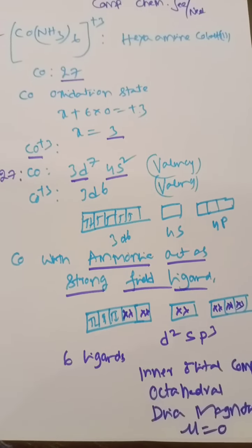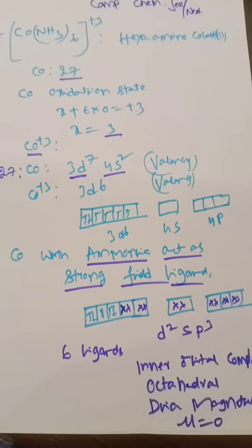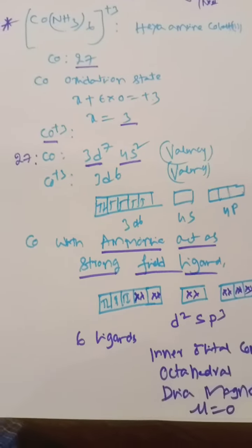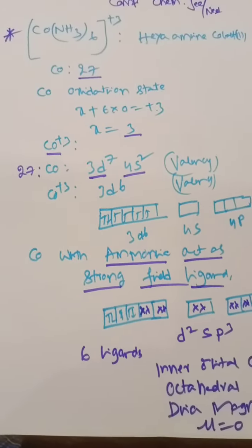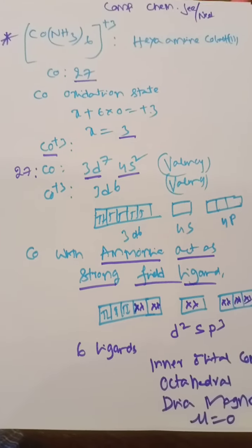So cobalt(III) is 3d⁶, 4s empty, 4p also empty. Note that even though ammonia is typically a weak field ligand, in the presence of cobalt, ammonia acts as a strong field ligand.